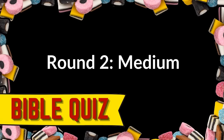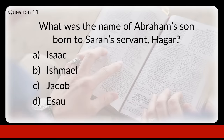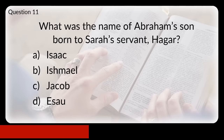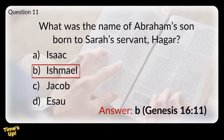Round two. Here are ten slightly more challenging questions. Question eleven: what was the name of Abraham's son born to Sarah's servant Hagar? Was that Isaac, Ishmael, Jacob, or Esau? The answer was B, Ishmael.